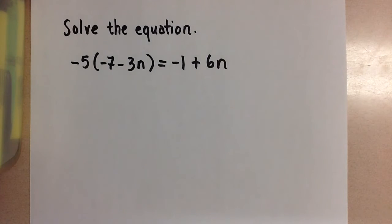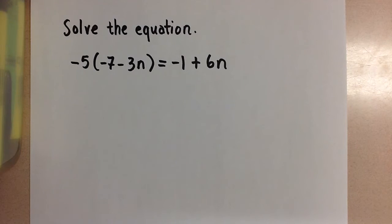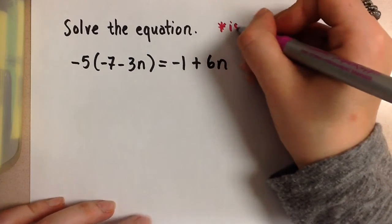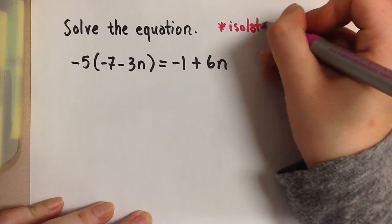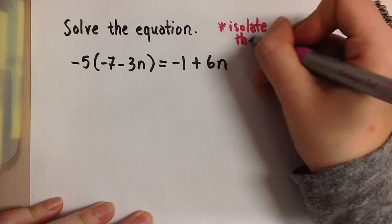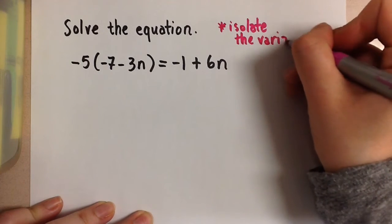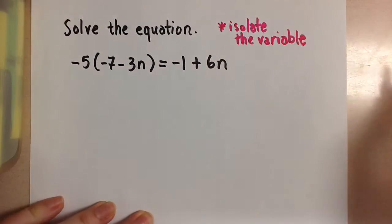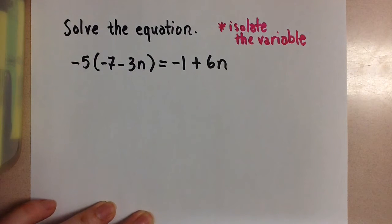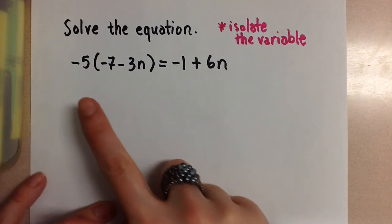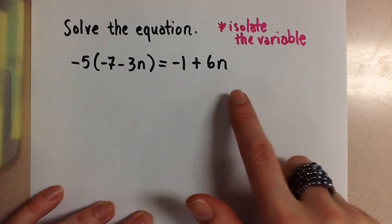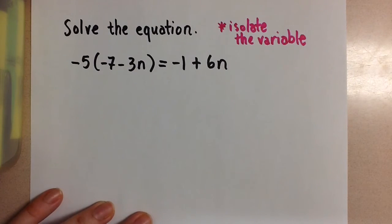Here we are going to solve this equation. When we solve an equation, that means isolate the variable, or get the variable by itself. The variable in this question is n. Our goal is to get n by itself so that we can find the value of n that will satisfy this equation and get both sides of the equation equal to each other.